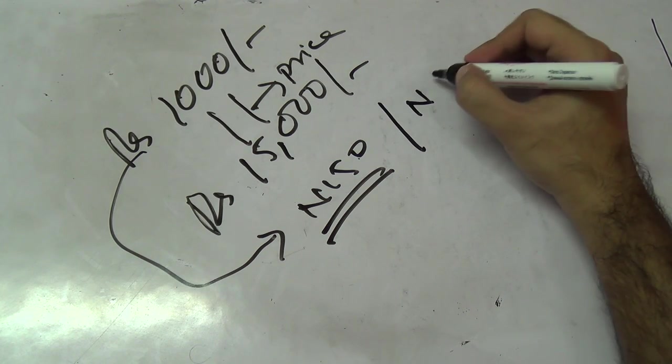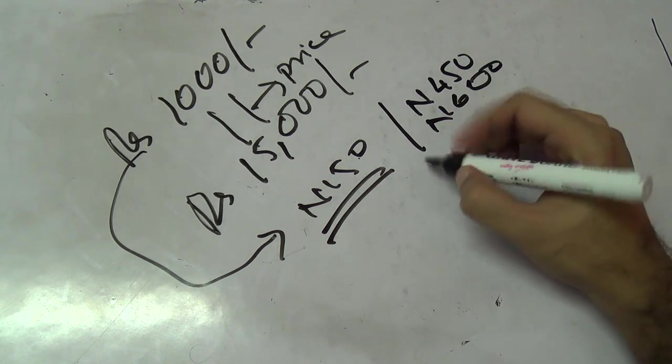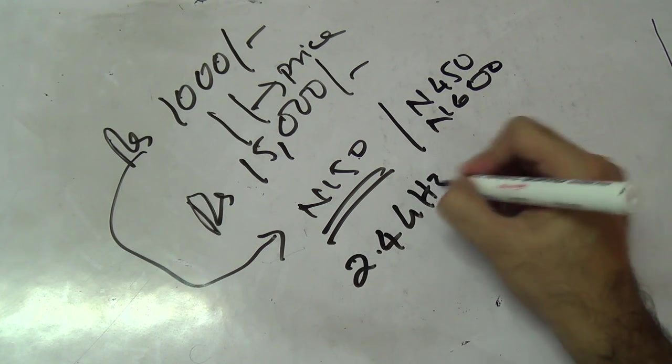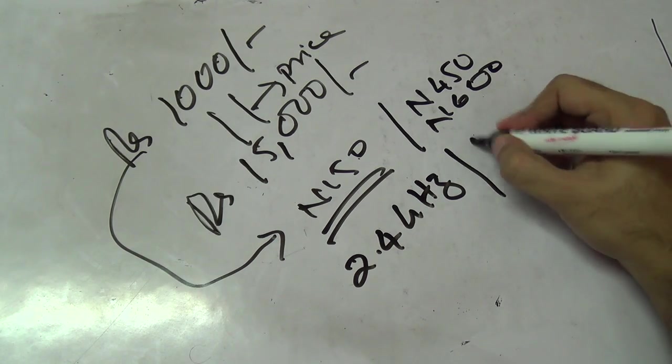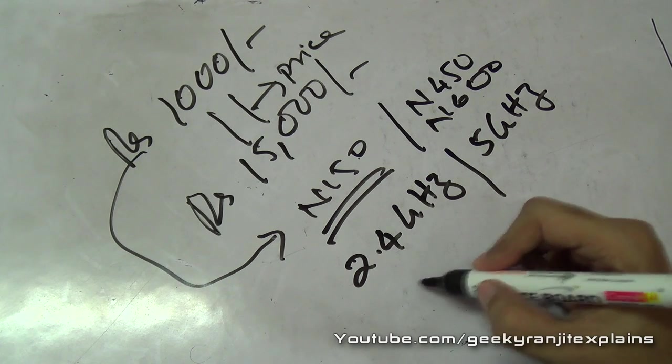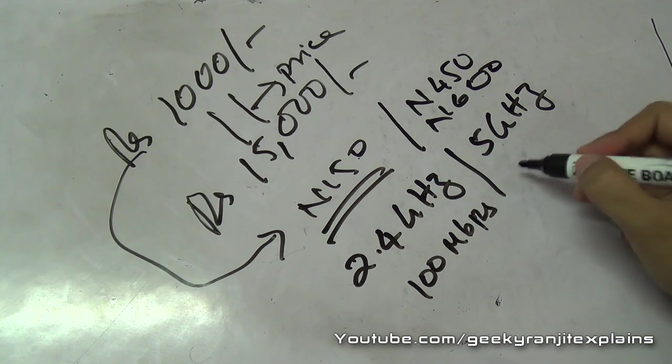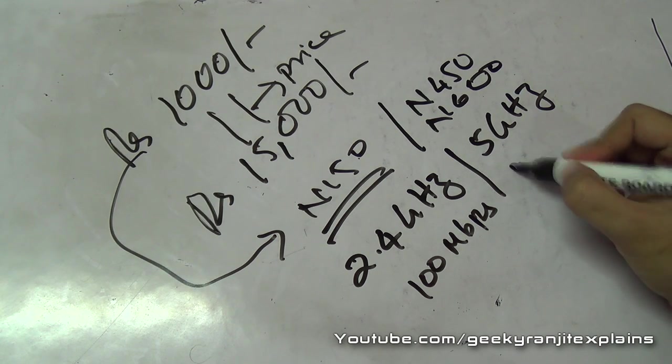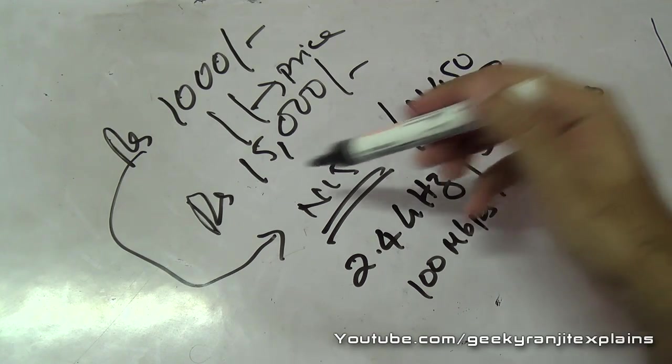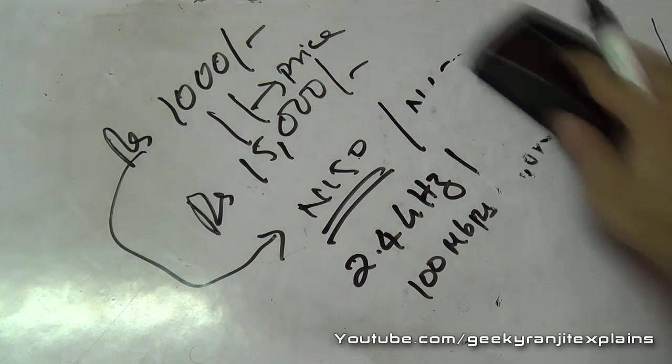As you move further, you get advanced functionality. The speeds will obviously increase, for example n450 and n600. The basic ones just support 2.4 gigahertz, but as you move up the chain you'll also get 5 gigahertz support. The basic ones have 100 Mbps LAN ports, but higher end ones support gigabit ports, that's 1000 megabits per second. If you move higher, the feature sets also increase.